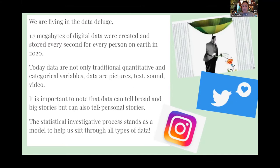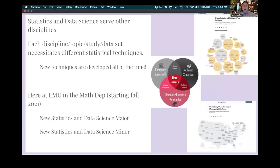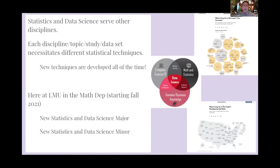Data can tell broad, big stories, but it can also tell personal stories — how is my health doing? What is my state of health over 10 months in a pandemic? The statistical investigative process I described stands as a model to help us sift through all data types and all types of studies. I'll leave everyone with this: statistics and data science are really here to serve other disciplines. Each discipline or study necessitates different statistical techniques, and new techniques are developed all the time. This fall we are starting a new statistics and data science major and minor at LMU.